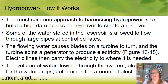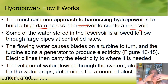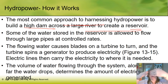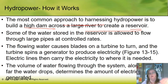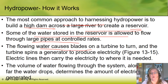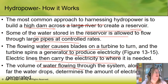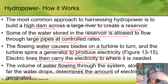The most common approach to harnessing water is to build a high dam across a large river, creating a reservoir. Water stored in the reservoir is allowed to flow through large pipes at controlled rates. The flowing water causes the blades of a turbine to turn, which produces electricity carried by electric lines. The volume of water flowing through the system along with how far it drops determines how much energy is generated — the higher the dam and longer the drop, the more energy.